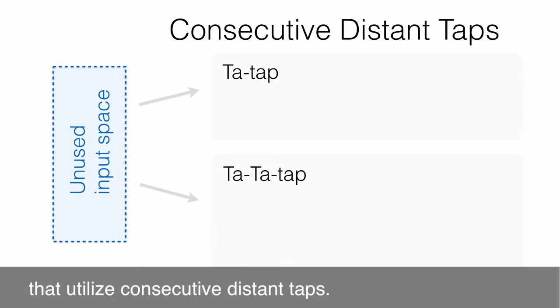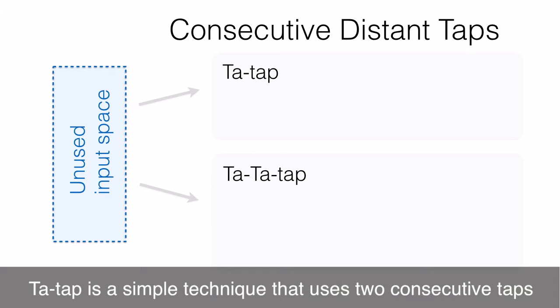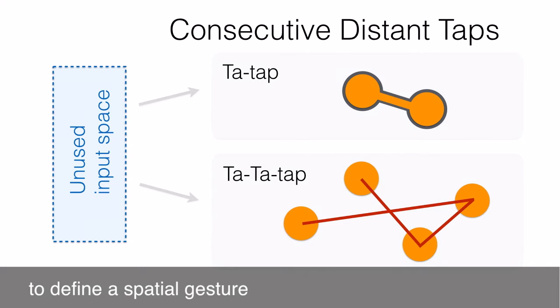We designed two interaction techniques that utilize consecutive distance taps. Ta-Tap is a simple technique that uses two consecutive taps. Ta-Ta-Tap uses a series of consecutive distance taps to define a spatial gesture. Let me explain Ta-Tap first.